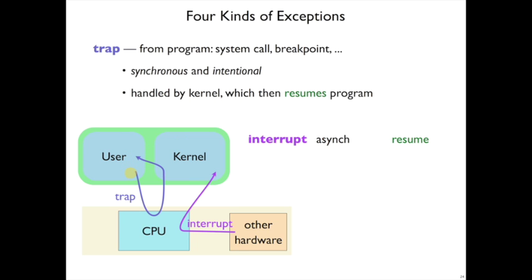Another possibility is a trap. A system call, for example, would be called a trap. There are other ways to request a breakpoint for debugging from within a program. These are things that are triggered by the program itself, so they're synchronous - part of the normal control flow - and they're intentional. When you made a syscall, the code really meant to make a syscall there. These things trigger an exception in the CPU which goes to the exception handler in kernel mode, and typically the kernel handles it and then just resumes the program.